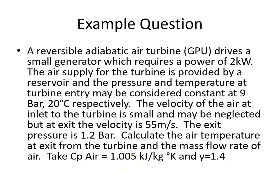A reversible adiabatic air turbine, which might be in a ground power unit for example, drives a small generator which requires a power of 2 kilowatts. The air supply for the turbine is provided by a reservoir and the pressure and temperature at the turbine entry may be considered constant at 9 bar, 20 degrees Celsius respectively.